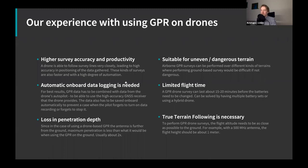We also realized there is a need for automatic data logging — so that logging starts and stops when the flight starts and stops. Otherwise the pilot might forget to turn on data logging, or forget to turn it off after the flight, potentially losing all the data. To solve this, we made our own onboard computer called the SkyHub, which stores all data onboard and combines the GPS data from the drone with the data from the GPR.